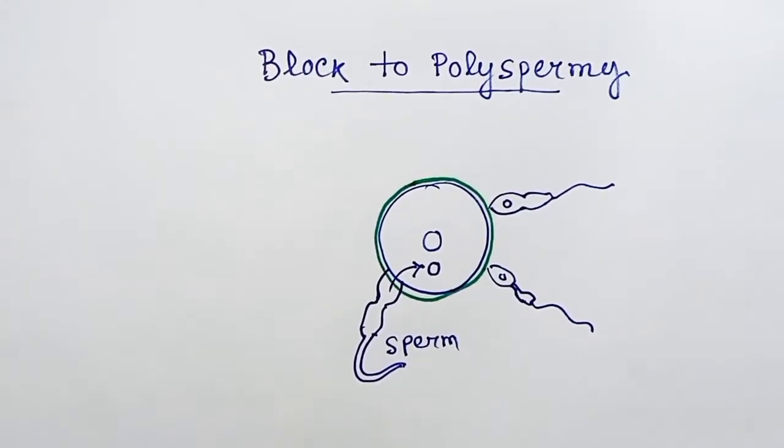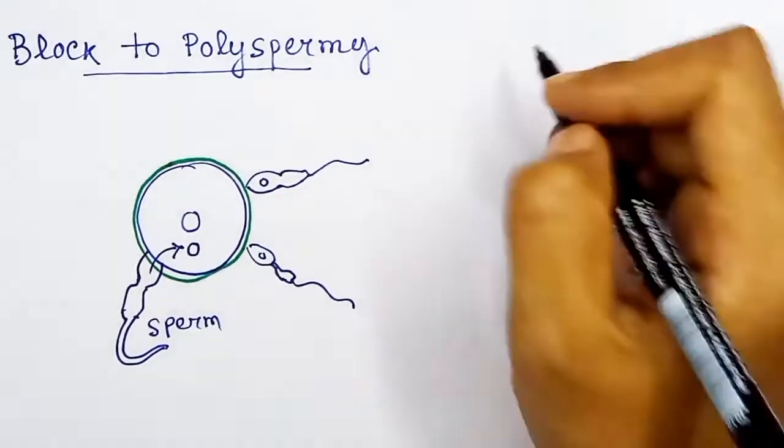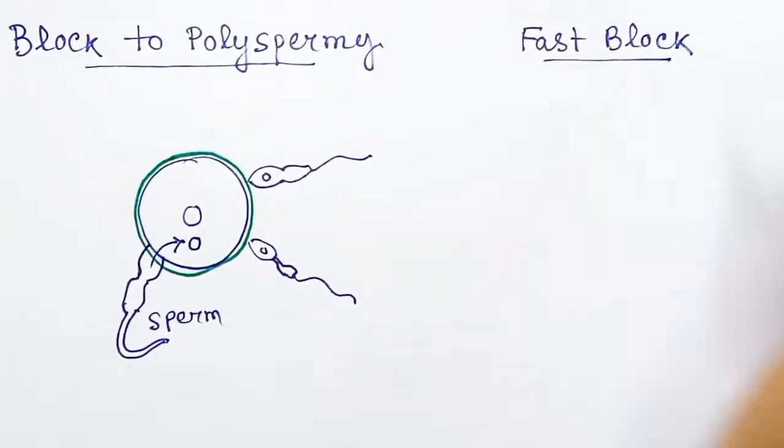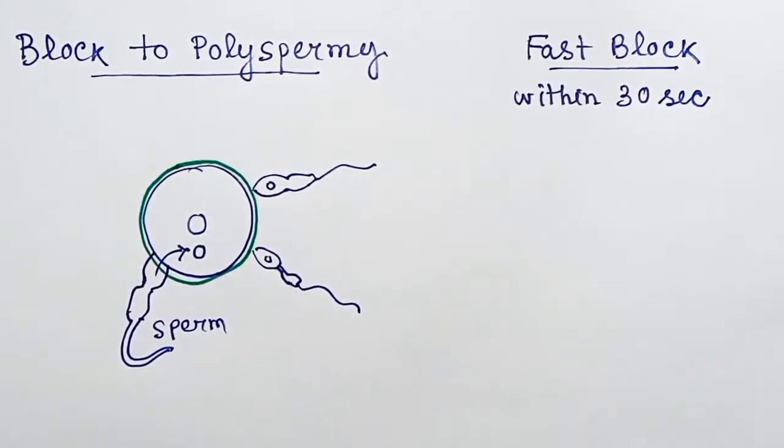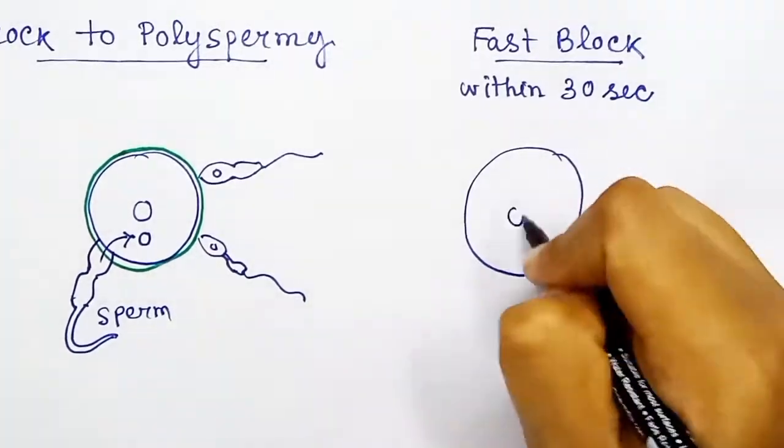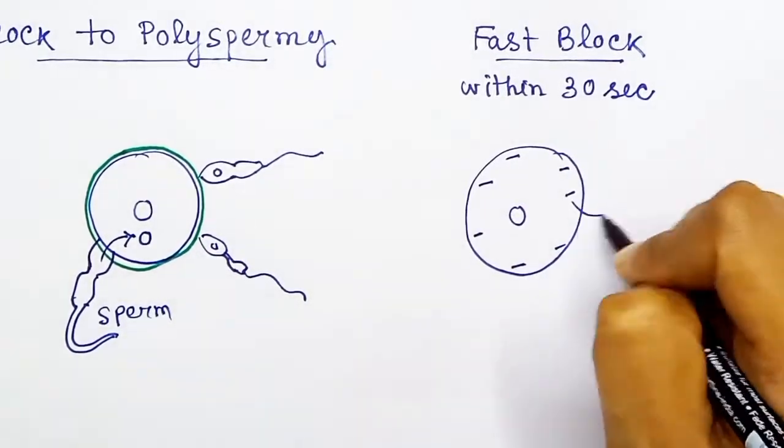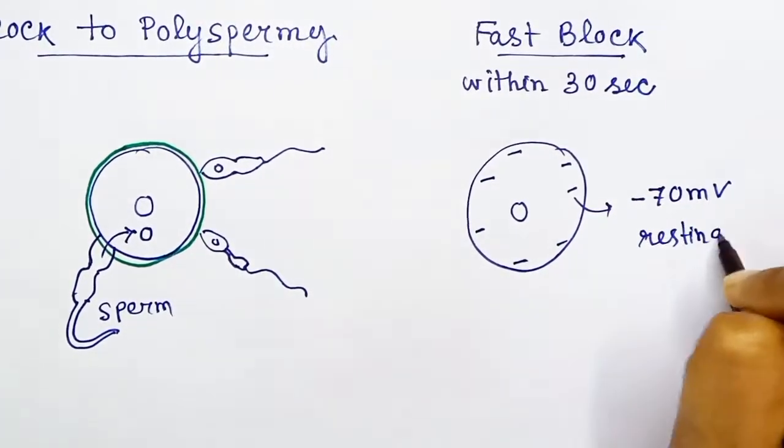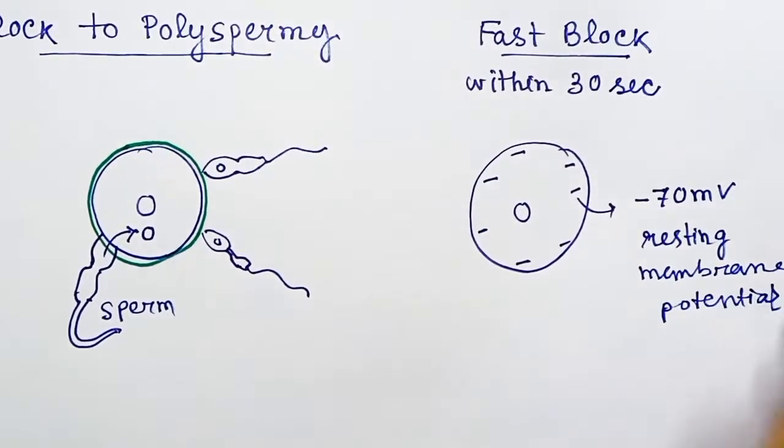After penetration of one sperm inside the ovum, polyspermy is prevented in two ways. The fastest working mechanism is called fast block polyspermy, which happens within 30 seconds of the penetration of the first sperm.